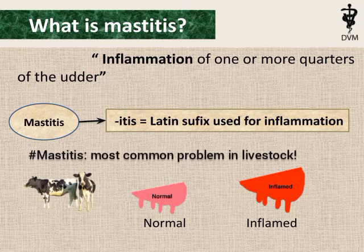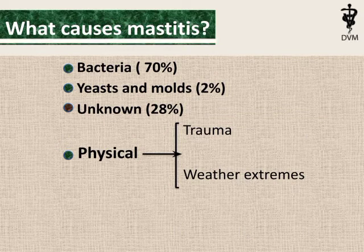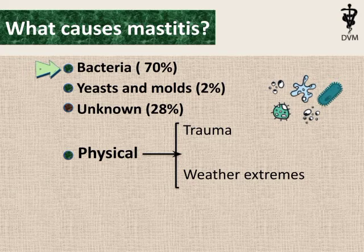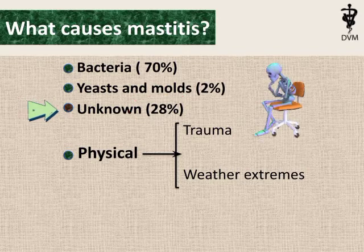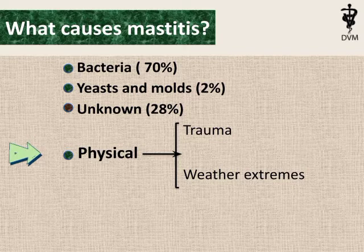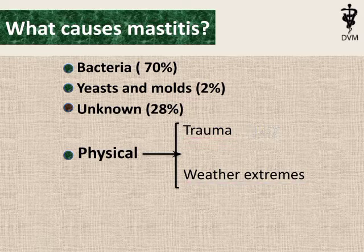Mastitis is the most common problem of livestock animals. Causes of Mastitis: bacteria can cause 70% of mastitis, yeasts and molds account for 2%, and 28% of causes of mastitis are still unknown. Physical causes include trauma or injury, and weather extremes can also cause mastitis.